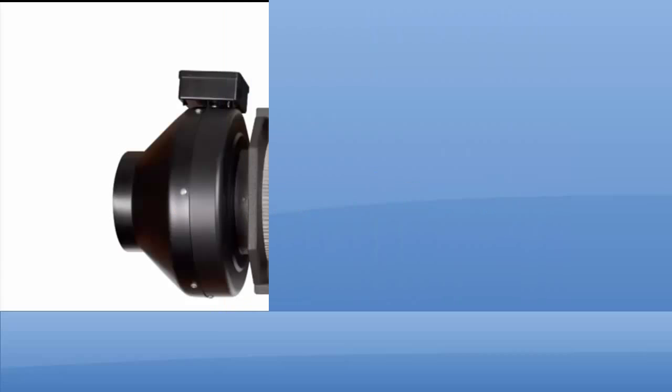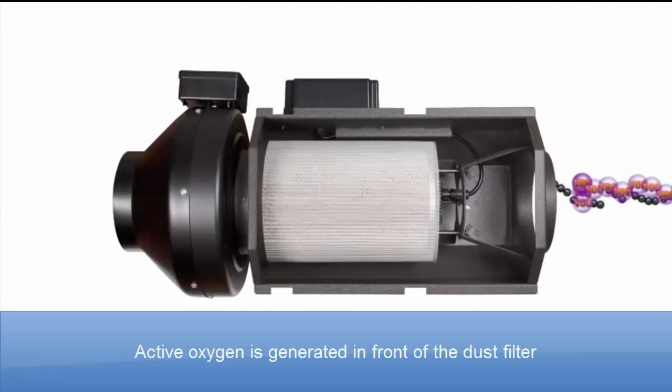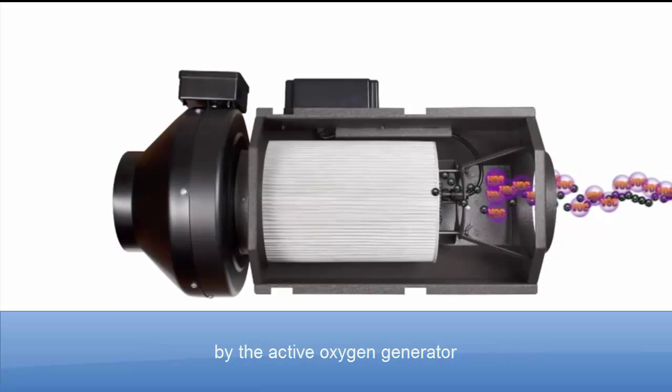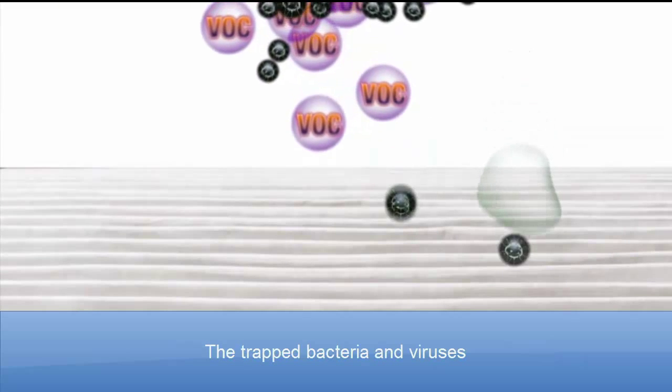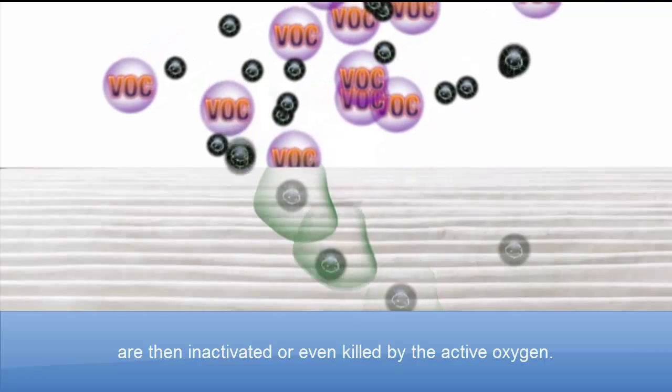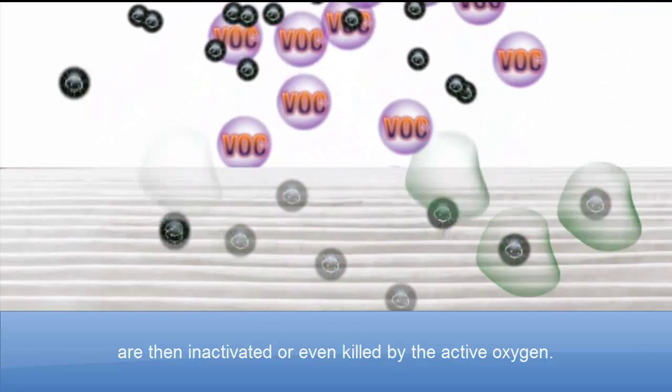How does it work? Active oxygen is generated in front of the dust filter by the active oxygen generator and transferred towards the NCCO reactor along the airflow. The trapped bacteria and viruses are then inactivated or even killed by the active oxygen.